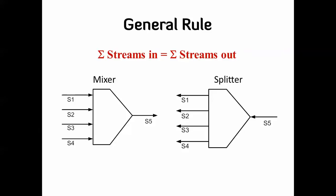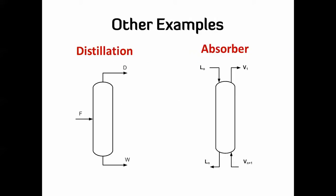It's a pretty simple rule: if you don't have reactions — it's a non-reactive system — then the summation of the species or streams coming into the system equals the summation of the streams going out. For example, in a mixer you have four streams coming in and one stream going out. You're just mixing everything. Similarly, for a splitter you have one stream going in and four streams coming out, so the total flow rates of streams 1, 2, 3, and 4 equal the flow rate of stream 5.